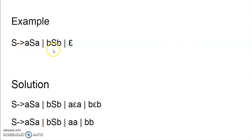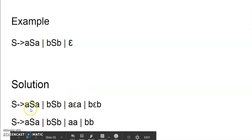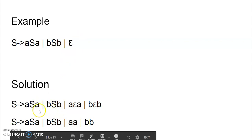Here S is producing epsilon. We have to remove this. Wherever we have S, put epsilon and get the value. In aSa, put epsilon and get the value aa. In bSb, put epsilon and get bb. Remember to add those to the existing productions and then remove epsilon. Our answer would be S produces aSa | bSb as before, and we have added aa and bb to the productions. This CFG is now free from epsilon.